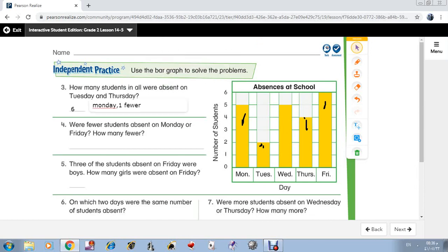Number 5: 3 of the students absent on Friday were boys. How many girls were absent on Friday? How many students were absent on Friday? 6. So 3 of them were boys, so the other? Yes, girls. Excellent, good. So the answer is 3.